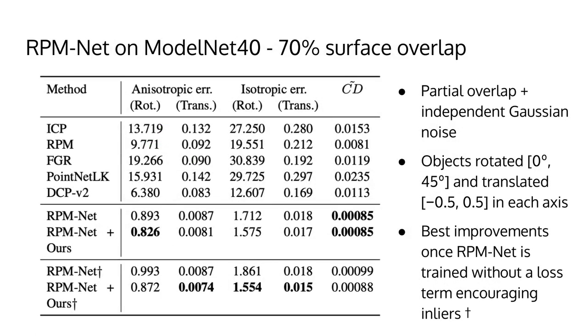For RPM-Net, we report an experiment where there is only 70% partial overlap between point clouds in conjunction with independent Gaussian noise that is added to each point cloud. We now also report isotropic rotation and translation errors as well as chamfer distance. RPM-Net is a strong baseline in this scenario. Nevertheless, we manage to improve it further, especially once we remove the inlier encouraging loss term that was originally proposed by its authors.